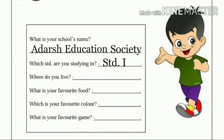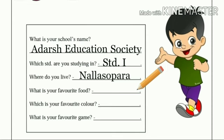Next: Where do you live? We live in Nala Sopara, so we are going to write 'Nala Sopara' over here with the correct spelling. Next question: What is your favorite food? You have to write it here with correct spelling. Which is your favorite color? Write the correct spelling of your favorite color. What is your favorite game? You have to write the correct spelling of your favorite game. I hope all of you have understood how to solve this worksheet.